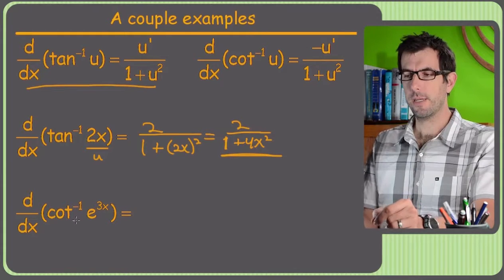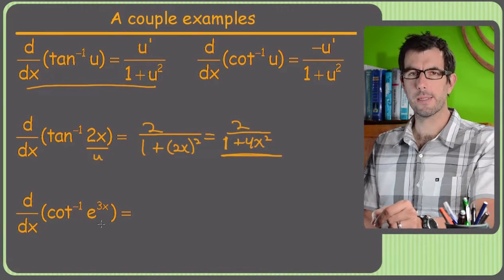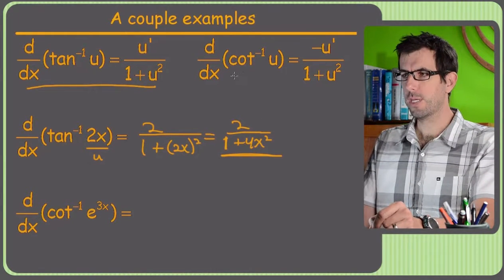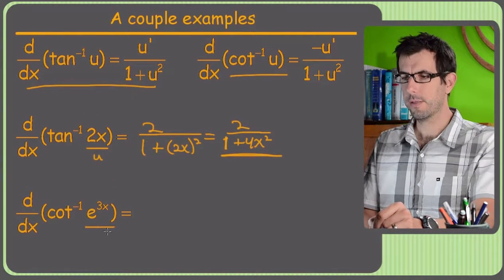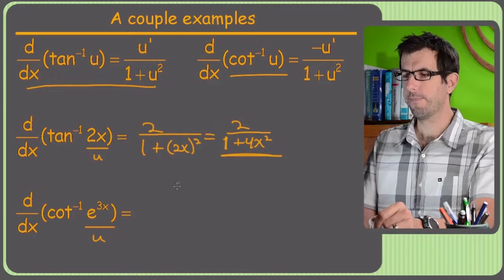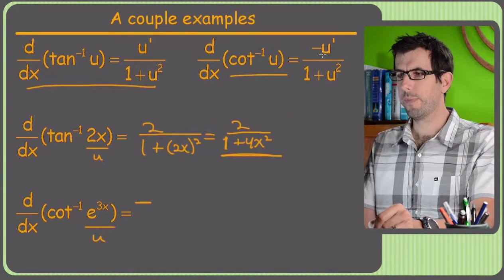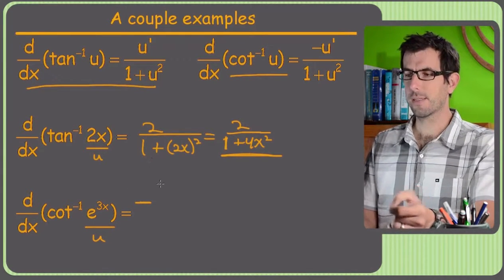Alright, last one, inverse cotangent. Now this one's a little bit juicier because E to the 3x is kind of its own little chain rule deal. But let's see what happens. So we got inverse cotangent. It's just going to be negative U prime. So this is obviously my U right here. So first of all, I got negative. Then I've got the derivative of U. E to the 3x, what's the derivative of E to the 3x? Well, it's E to the 3x, but then I've got to do chain rule on it because if it was E to the x, the derivative would just be E to the x.